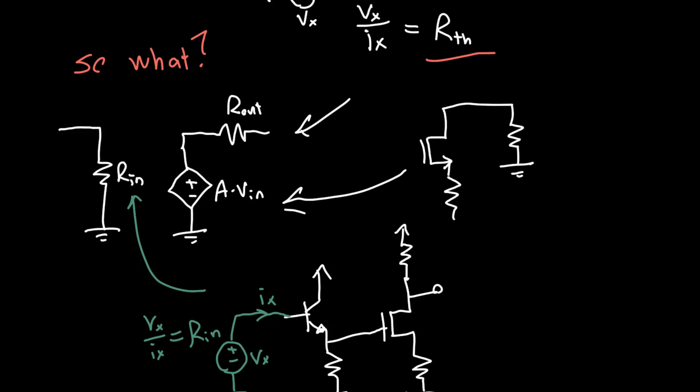So it doesn't matter how nasty it looks, how many different devices you've got inside, how many resistors you've got inside. If you apply a voltage to the input and measure the current, you can get the input resistance of the amplifier.